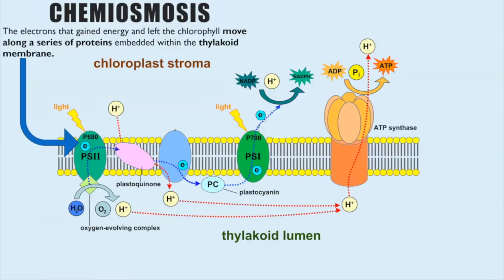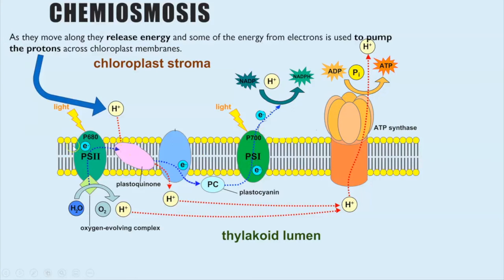Now we can see fully how NADPH — reduced NADP — and ATP are created through a series of steps. Step one: the electrons gained from the photoionization of chlorophyll are picked up by proteins embedded in the membrane of the chloroplast. The electron passes along what we call an electron transfer chain — just proteins embedded in the membrane — and as those electrons move to each protein, they release energy at each movement.